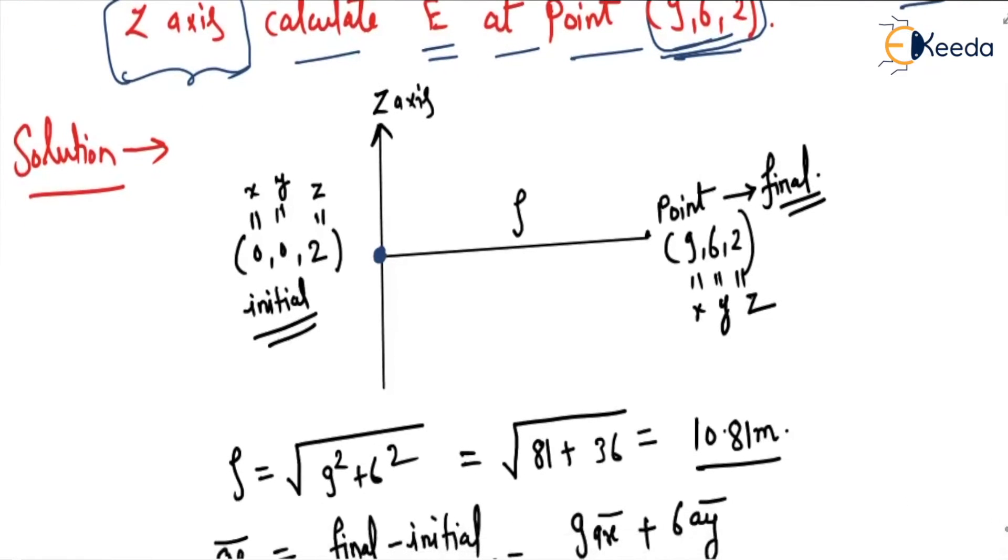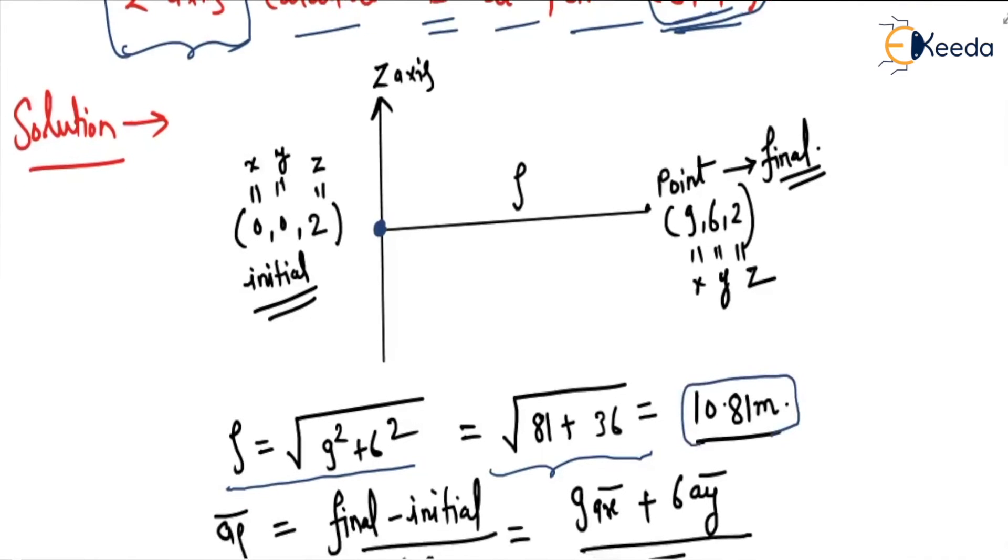So rho equals square root of 9² plus 6², which equals square root of 81 plus 36, and after solving this becomes 10.81 meters.